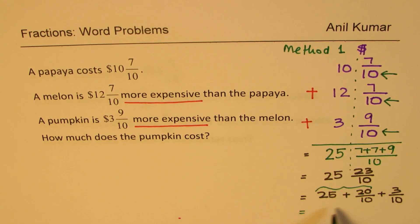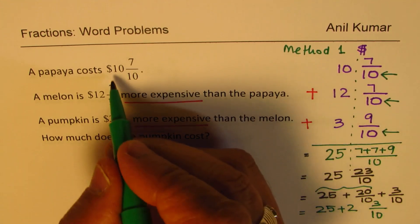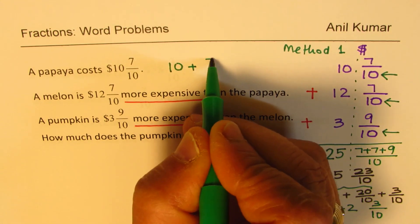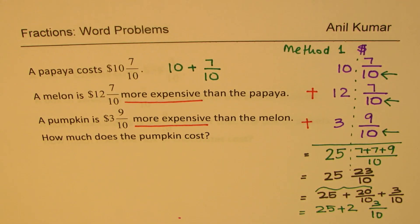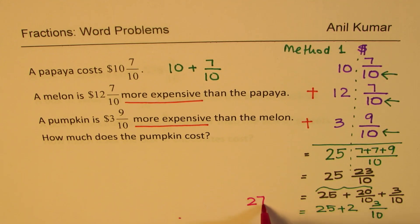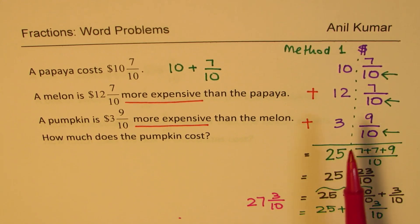When you combine the whole numbers and the converted fraction, you get 25 plus 2 and 3/10, which equals 27 3/10. So the cost of the pumpkin is $27 3/10. That's one way of doing it — and it's actually the easier way.